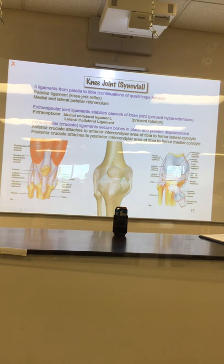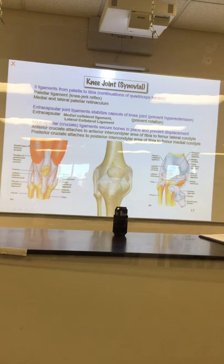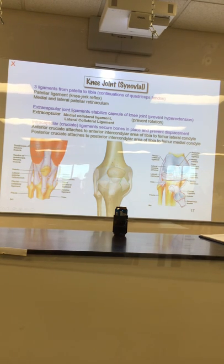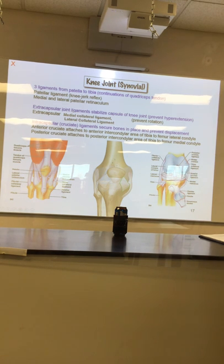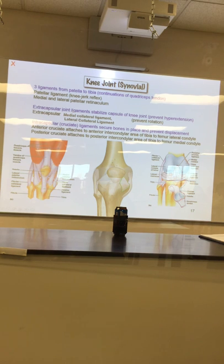On the back of the knee you can see where the ACL starts, right at the top. What the ACL does is keep the knee from shimmying off of its base.